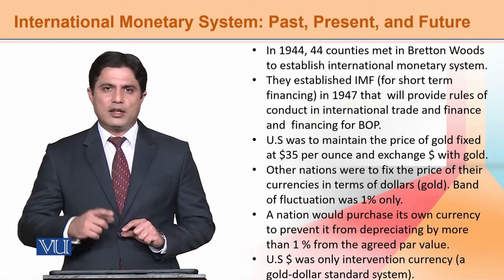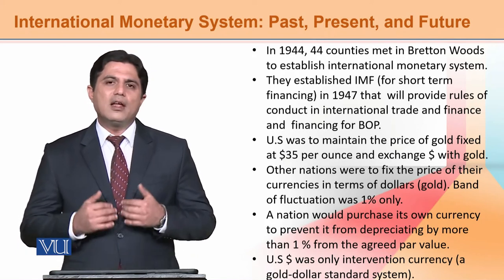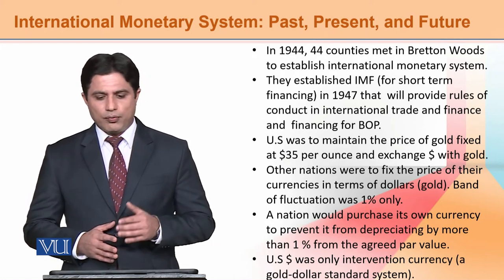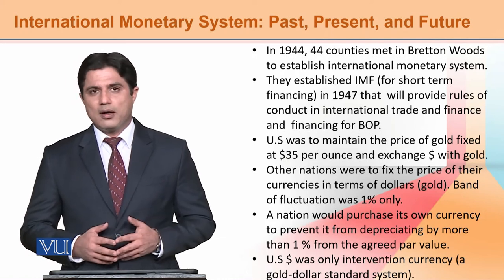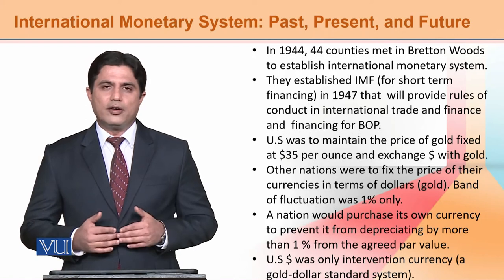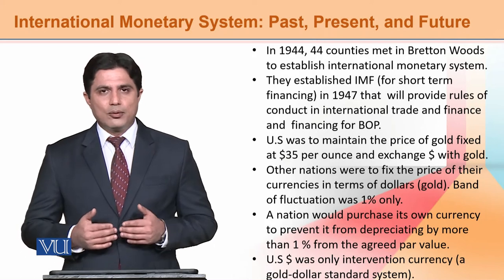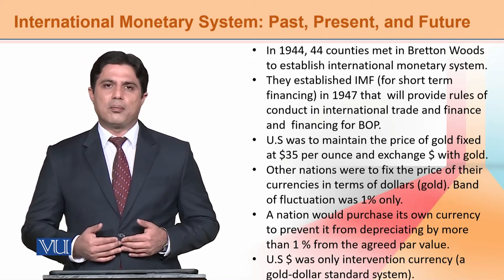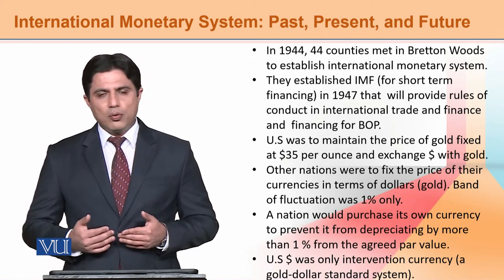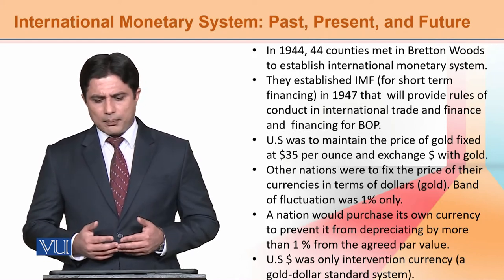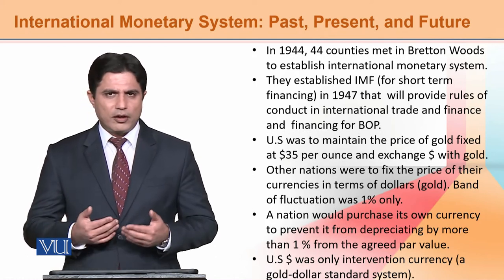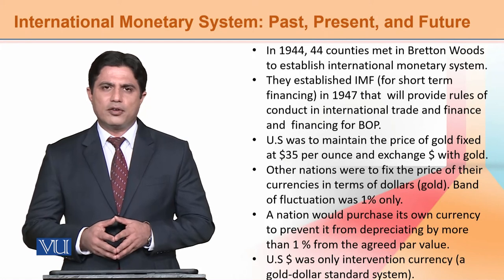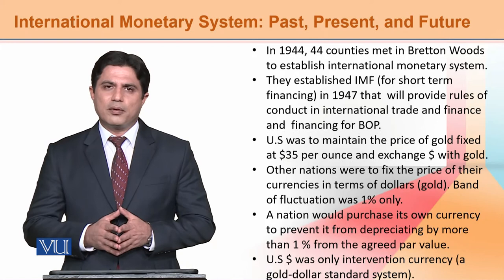A 1% fluctuation was allowed in exchange rate volatility. If a country had balance of payment issues, it would first use its international reserves to resolve them. If there was a surplus, the treatment would be different. A depreciation of exchange rate beyond 1% would not be done unilaterally — balance of payment issues were addressed through internal financing or international reserves.